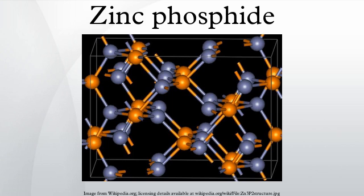ZNP2 has two forms: a lower temperature red tetragonal form and a black monoclinic form. In both of these there are chains of P atoms — helical in the tetragonal and semi-spiral in the monoclinic.